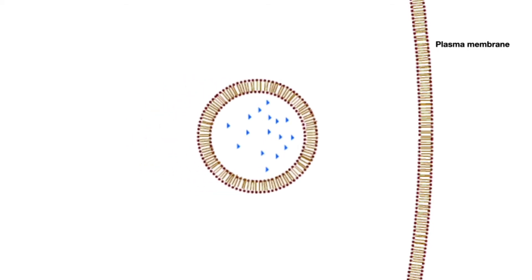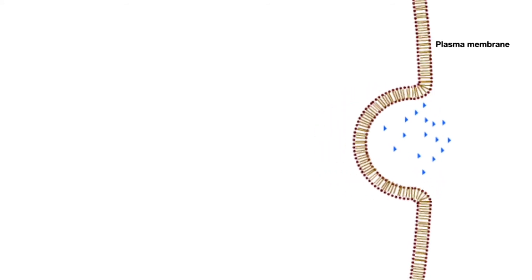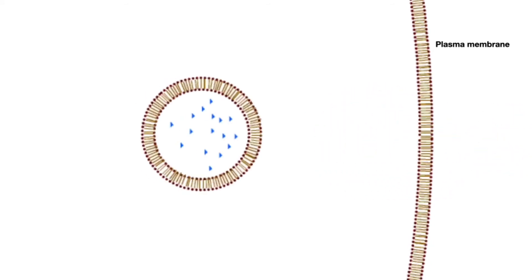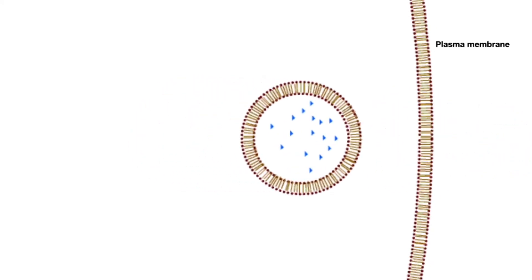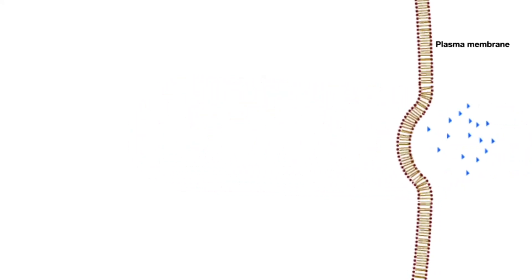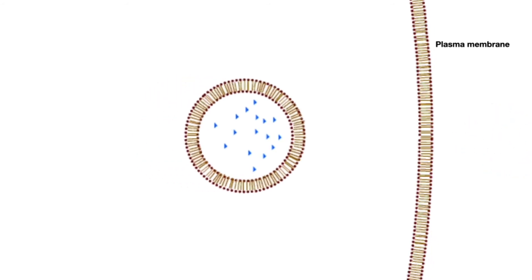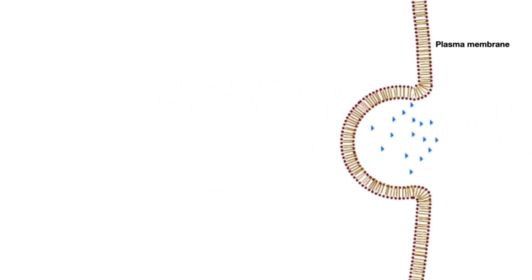Now it is headed towards the plasma membrane where it will deliver its contents to the outside of the cell by fusing with the plasma membrane. Since the membrane of the vesicle is made up of the same phospholipids that make up the plasma membrane, it simply becomes part of the plasma membrane itself.